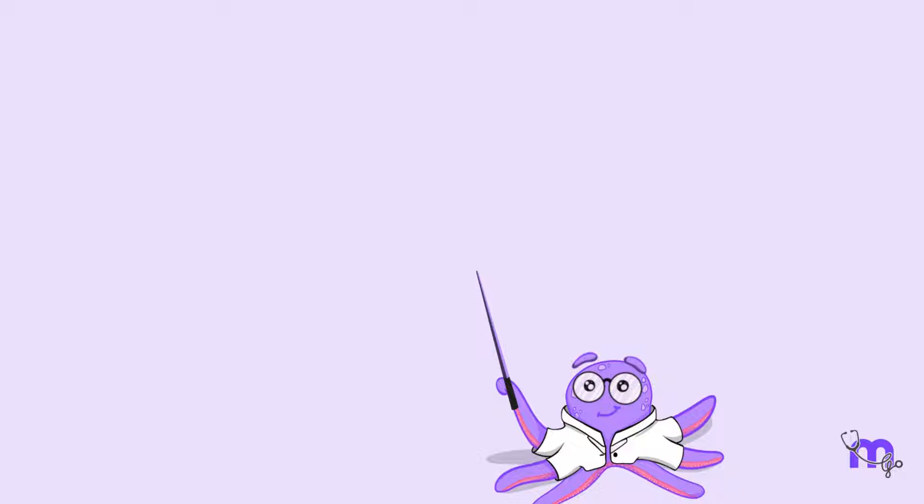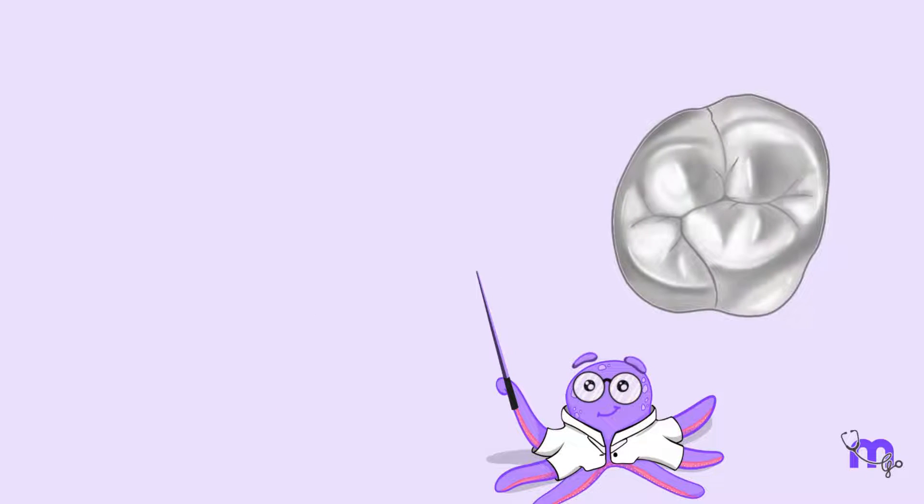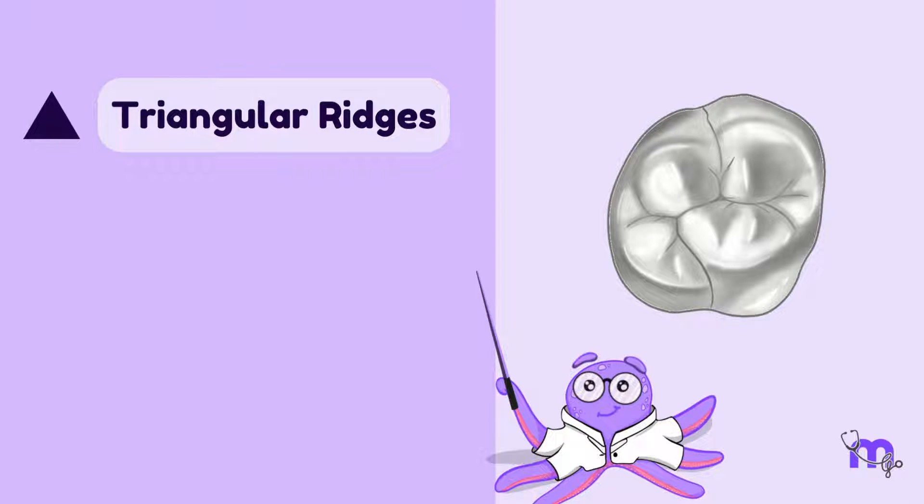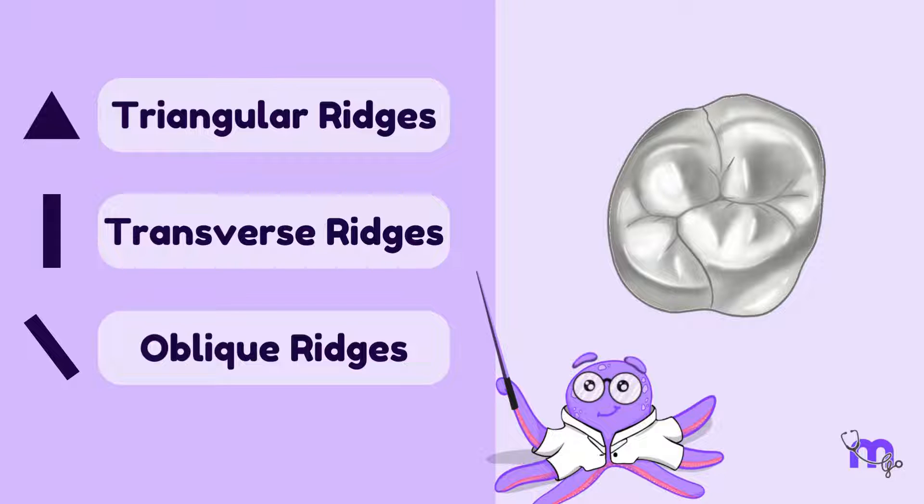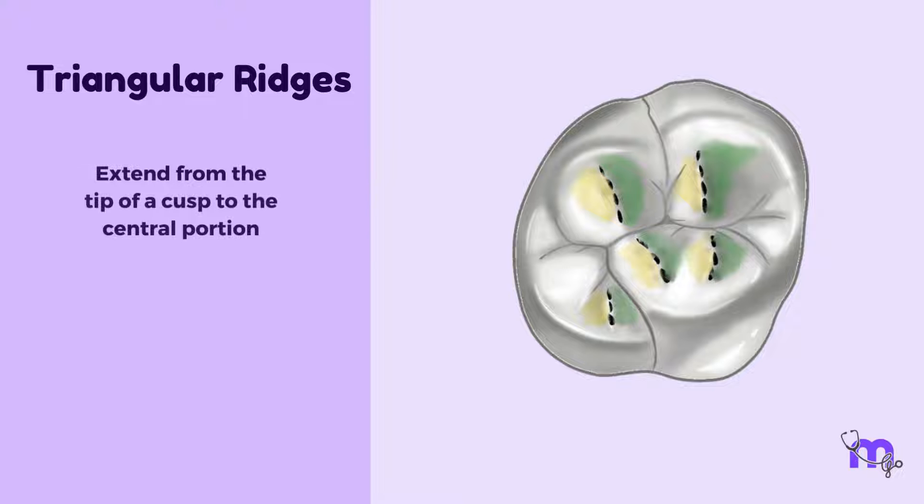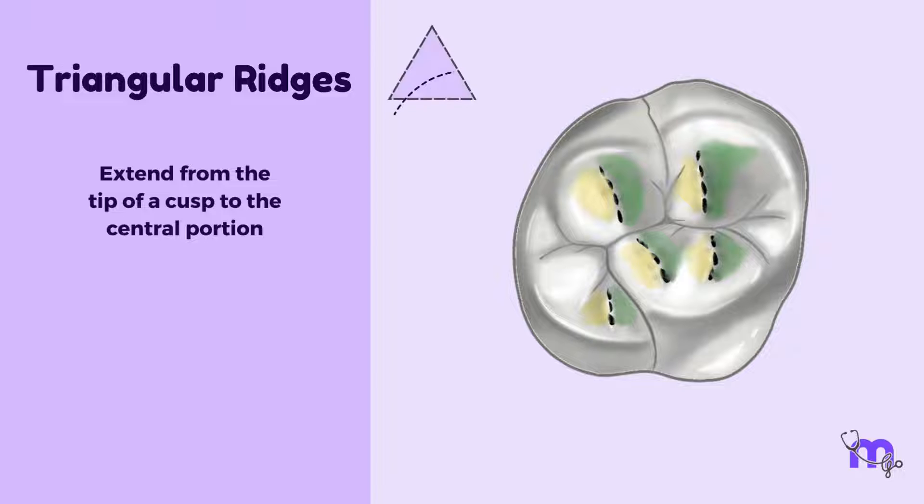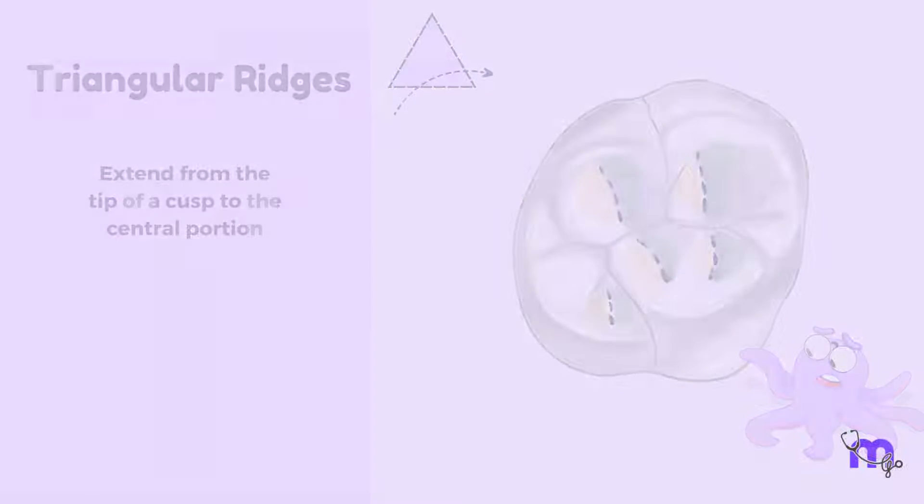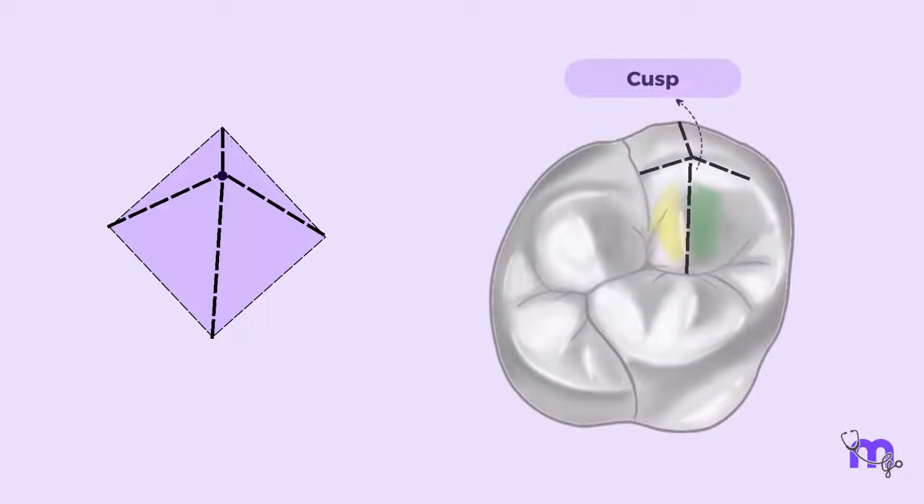Other types of ridges specific to posterior teeth are triangular ridges, transverse ridges and oblique ridges. Let's identify them one by one. Triangular ridges extend from the tip of a cusp to the central portion. It gets its name due to the triangular cross section that this ridge shows. Confused? Let us visualize a pyramid. Focus on the tip of the pyramid. This can be compared to the cusp of the tooth.